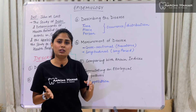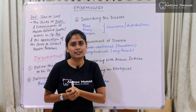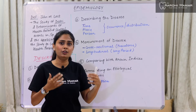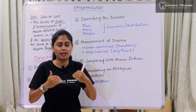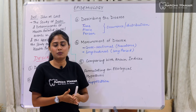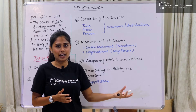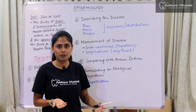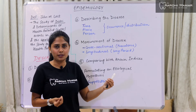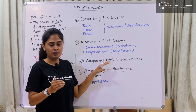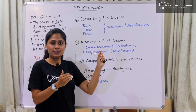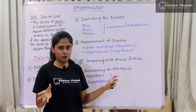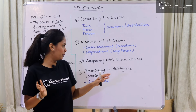The fifth point is comparing the disease with known indices. For COVID, the known indices are the RT-PCR test and CT scan that already existed before COVID came. RT-PCR was already used in labs, though not very regularly. We compare those RT-PCR and CT scan values with the COVID situation and the people having COVID symptoms.